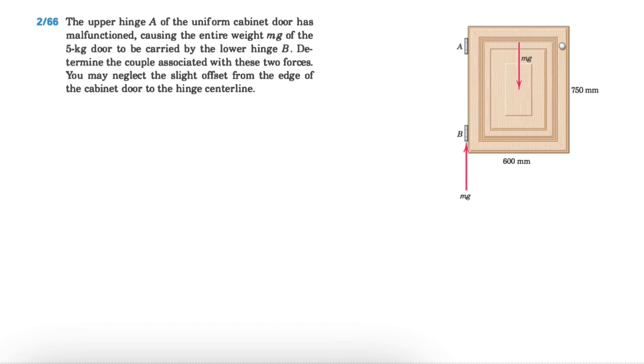Welcome back guys, we're going to be solving another question in today's video. We have Problem 66 from the second chapter of Meriam's textbook. We have this upper hinge A of the uniform cabinet door that has malfunctioned, causing the entire weight of the five kilogram door to be carried by the lower hinge B.